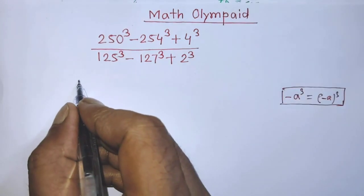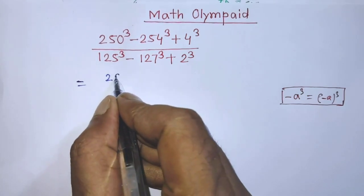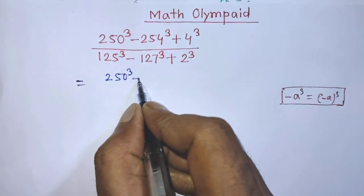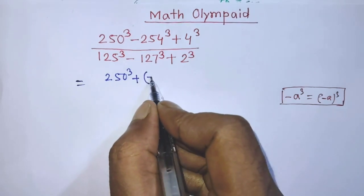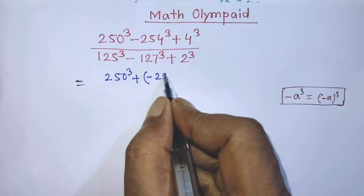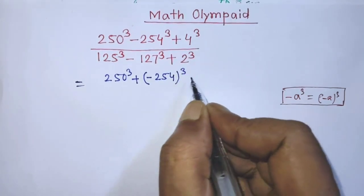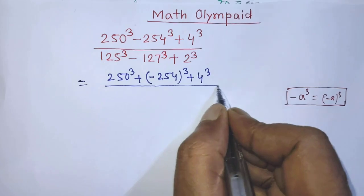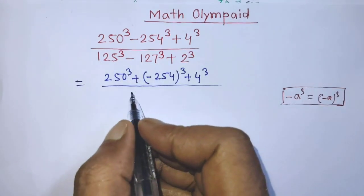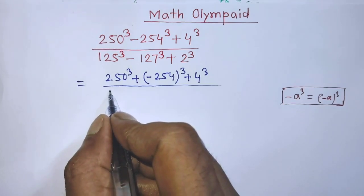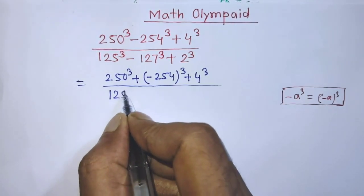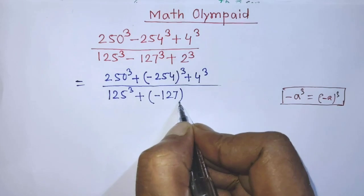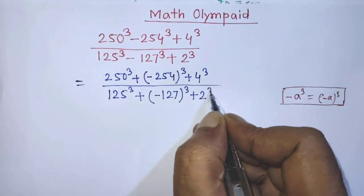So it will be 250 whole to the power 3. According to this formula, it will be plus, first bracket, minus 254 whole to the power 3, plus again we have to write 4 to the power 3, over. And in the place of denominator, similarly we have to write 125 whole to the power 3, plus minus 127 whole to the power 3, plus 2 to the power 3.